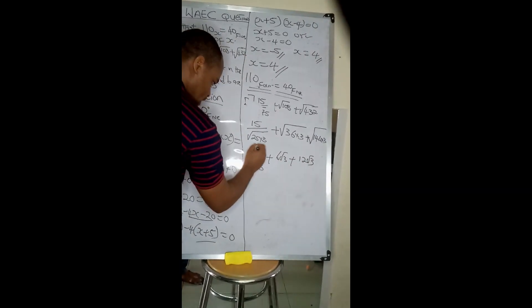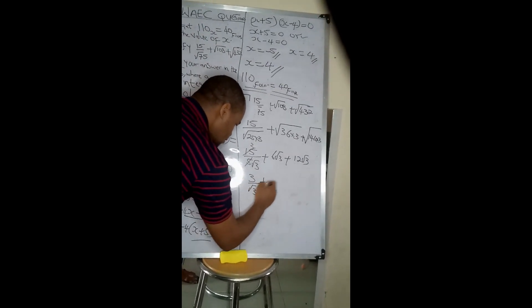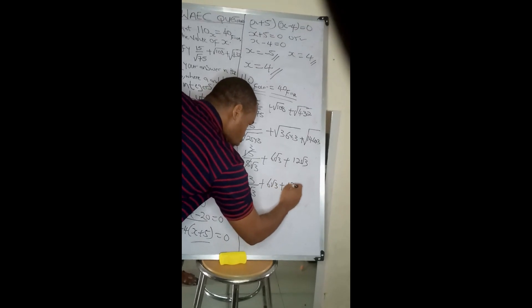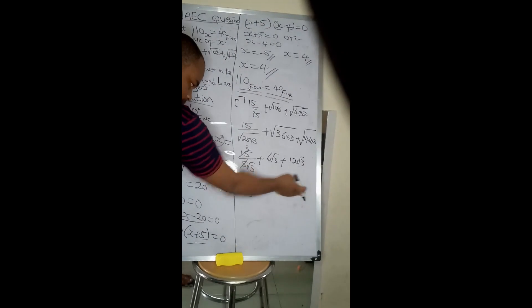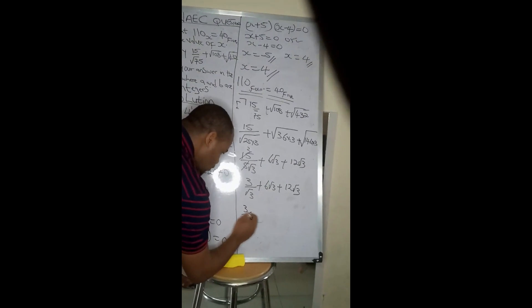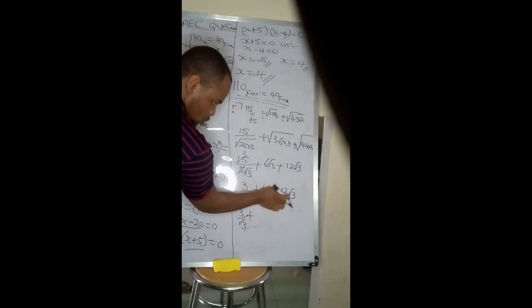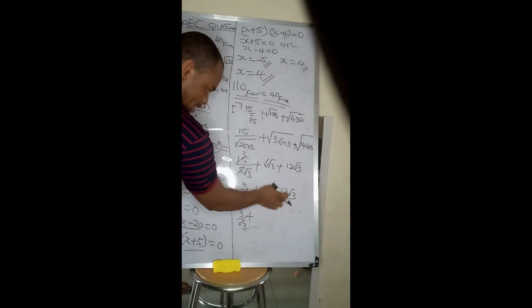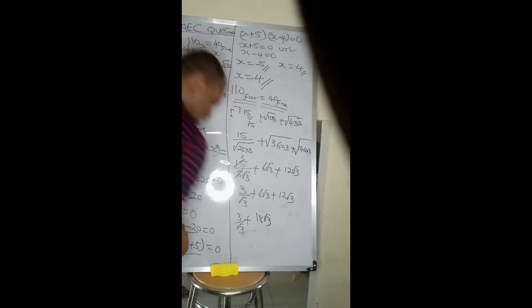5 into 15 is 3, so we can reduce this as 3 over root 3 plus 6 root 3 plus 12 root 3. Because root 3 is common, I can add my 6 and 12, which will give me 18 root 3.